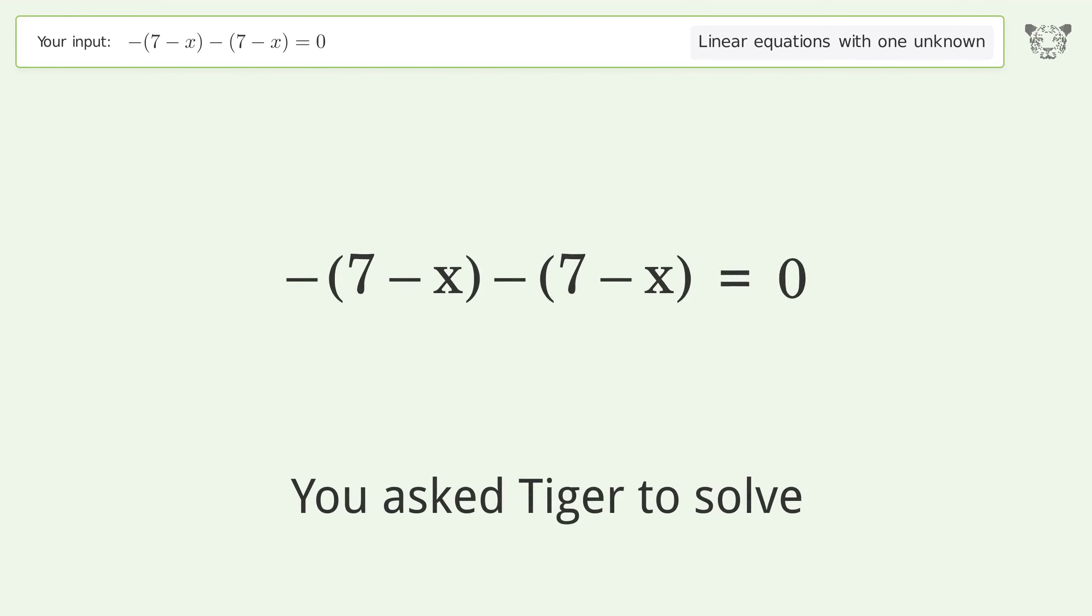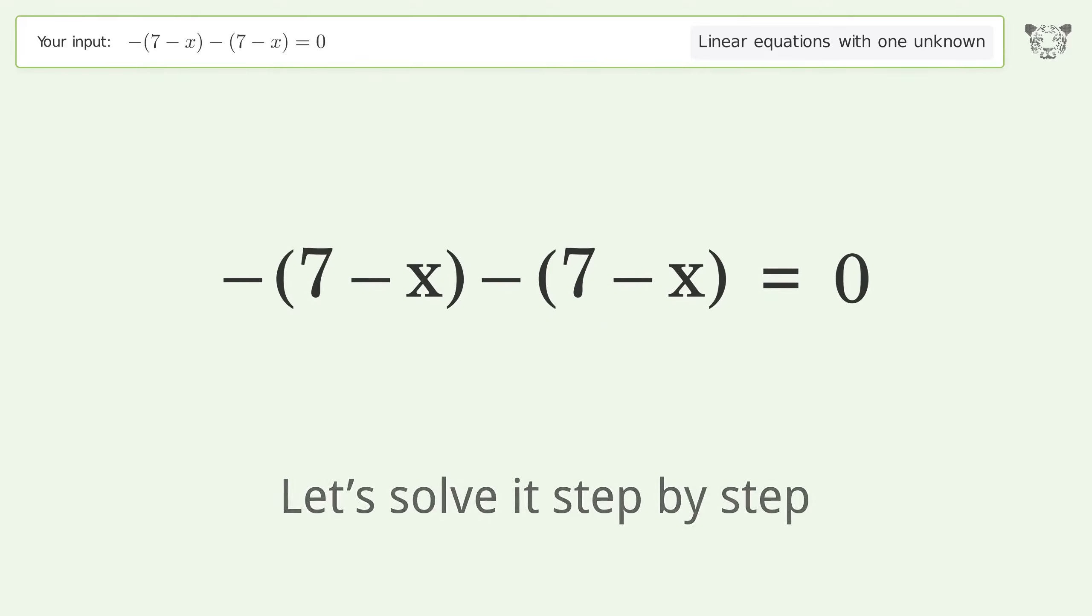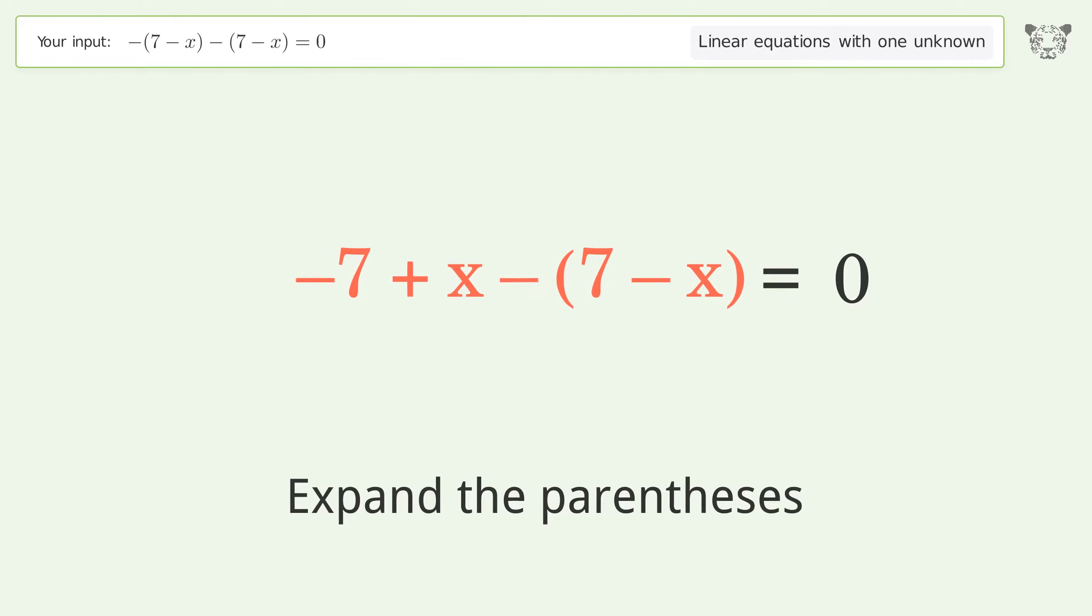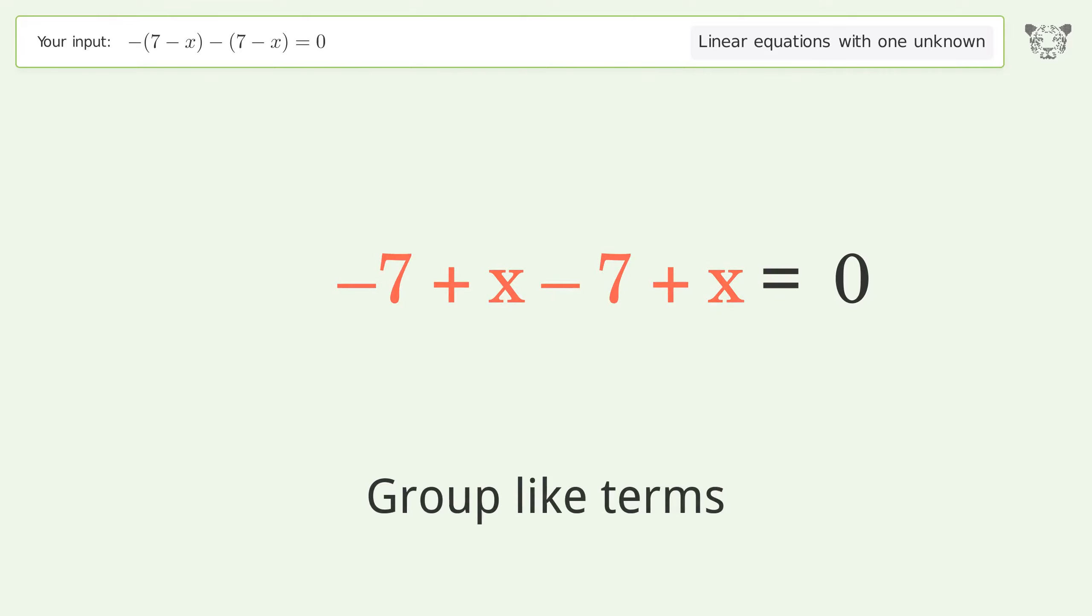You asked Tiger to solve this problem dealing with linear equations with one unknown. The final result is x equals 7. Let's solve it step by step. Simplify the expression, expand the parentheses, and group like terms.